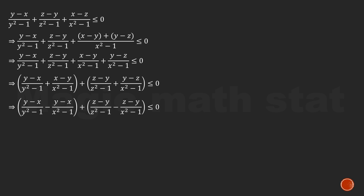Now look at the second fraction of the first bracket — we can rewrite (x-y) as -(y-x), so a negative sign comes out. Similarly, in the second bracket, (y-z) becomes -(z-y). So the final form is: (y-x)/(y²-1) minus (y-x)/(x²-1) plus (z-y)/(z²-1) minus (z-y)/(x²-1) ≤ 0.